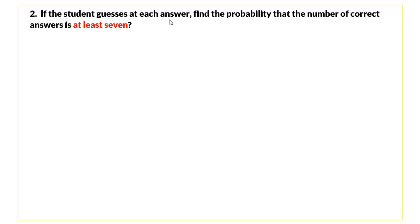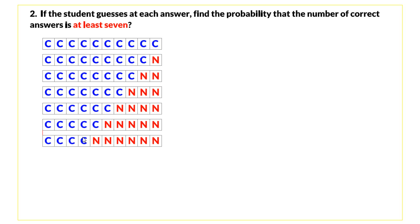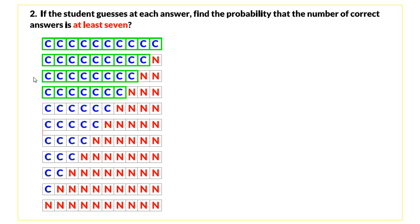For question two: if the student guesses at each answer, find the probability that the number of correct answers is at least seven. The possible numbers of correct answers range from 0 to 10. Answering at least seven correctly means answering exactly 7, 8, 9, or 10 questions correctly. These are disjoint events whose union is the event of answering at least seven questions correctly.